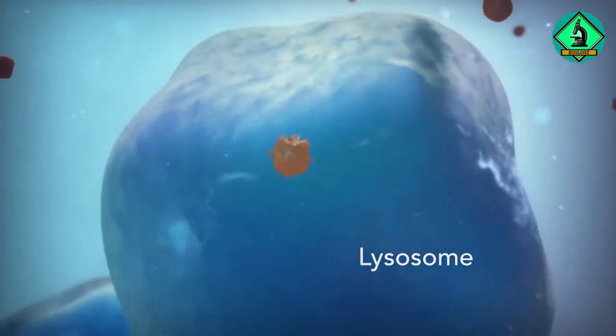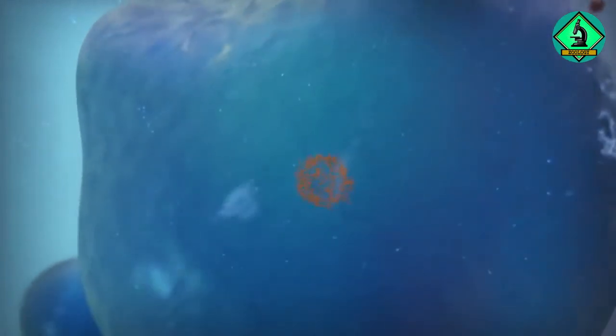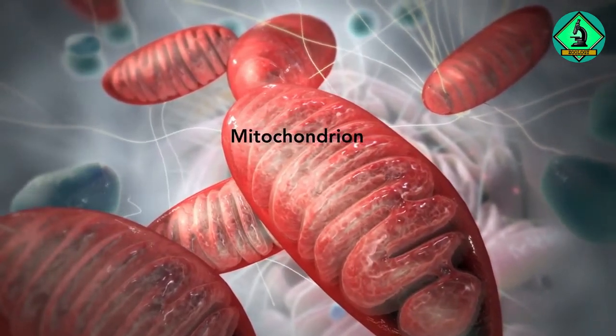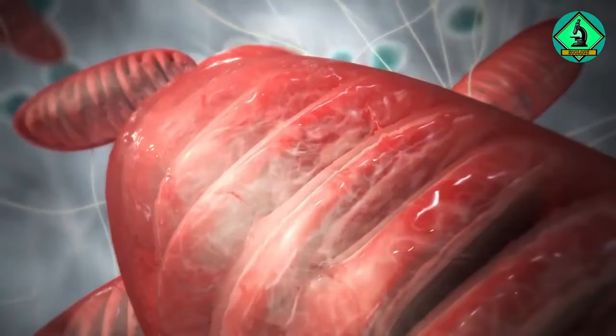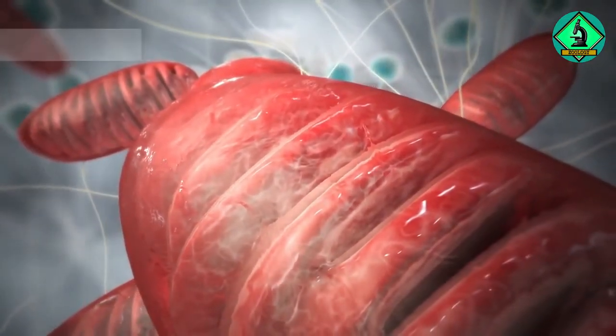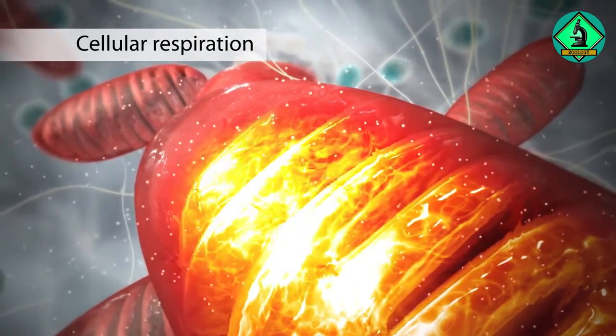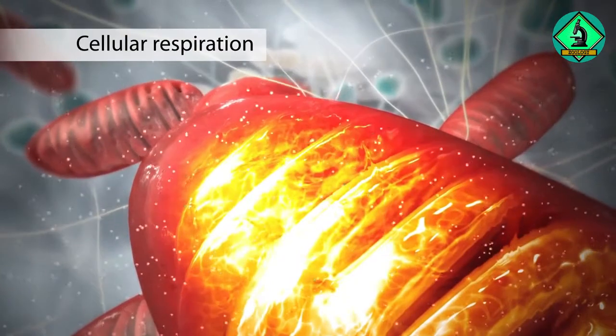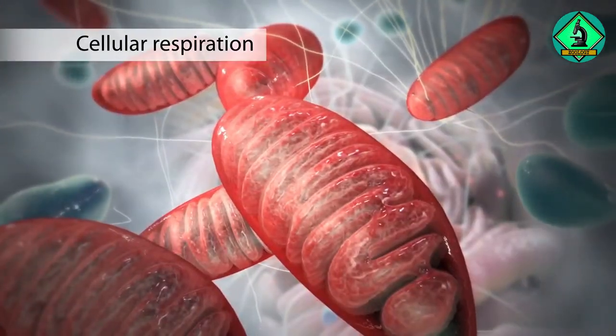The mitochondrion is an organelle that is the powerhouse for both animal and plant cells. During a process called cellular respiration, the mitochondria make ATP molecules that provide the energy for all of the cell's activities. Cells that need more energy have more mitochondria.